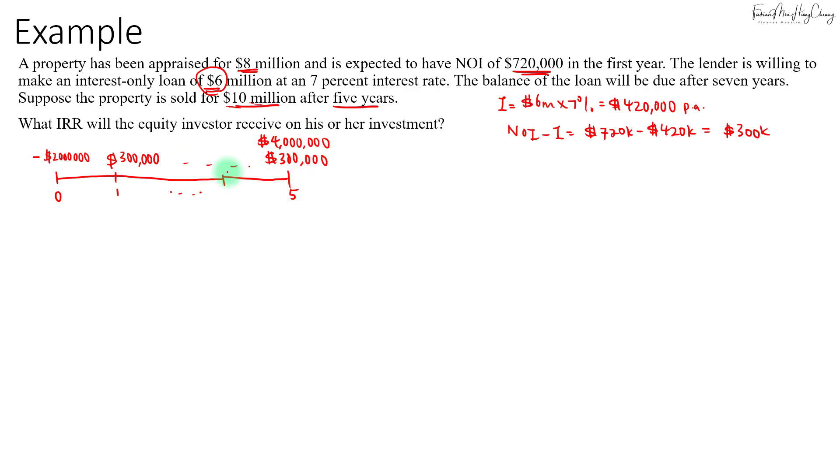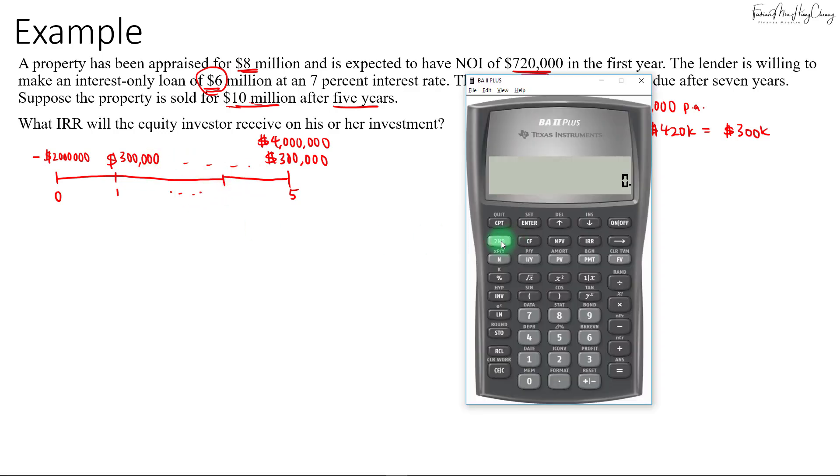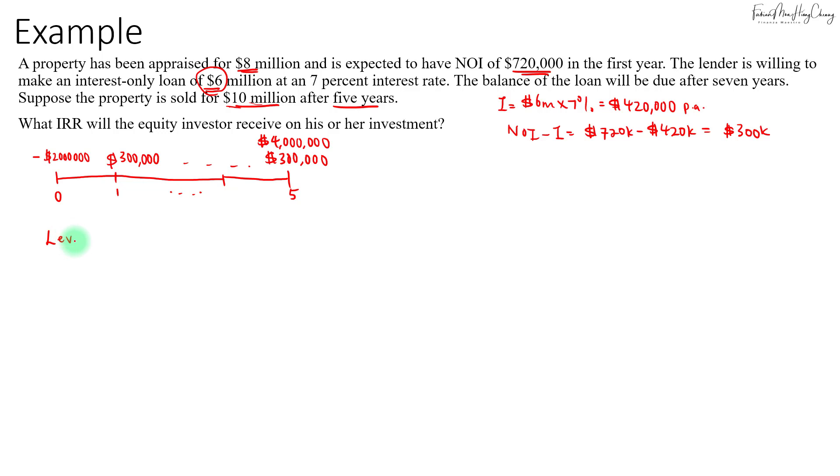Let's clear the cash flow worksheet. Your initial outlay here will be negative $2 million for the equity investor—that's PV. Then $300,000 will be the PMT for five years, and then your FV will be $4 million. Then we compute your IY, which is 26.77% per year. So the leveraged IRR will be 26.77% per annum.